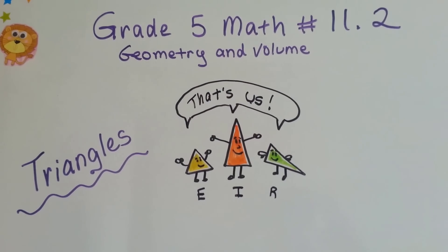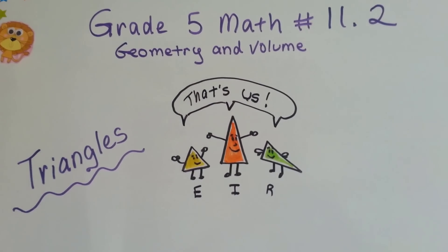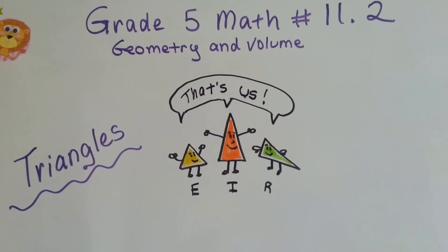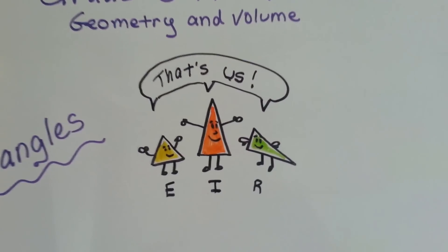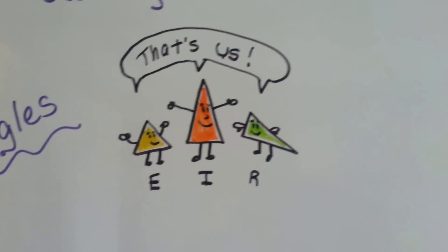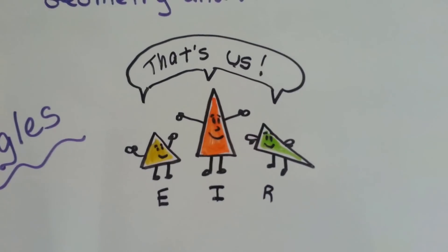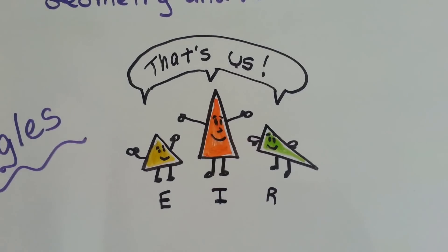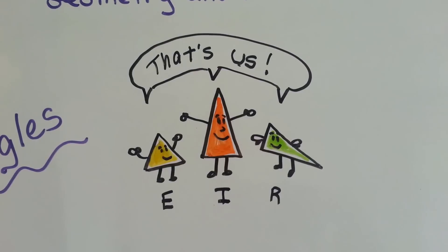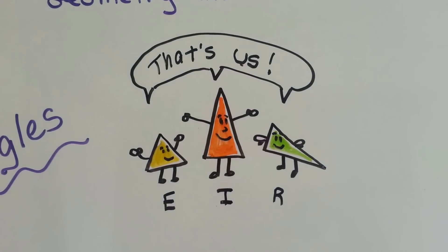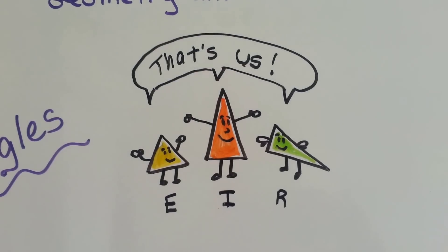Grade 5 math, number 11.2: triangles. See the little letters underneath them? Those are their initials. E is for equilateral, I is for isosceles, and R is for right.